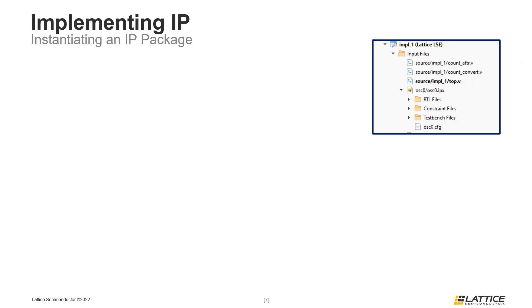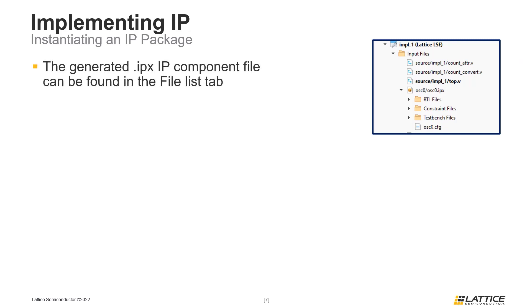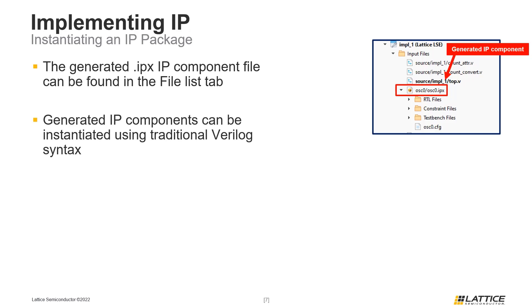Once an IP component has been generated, its IP component file will be added to Radiant's File List tab. The name of this file will match the name that was defined during component creation. This IP component file contains all the files that were generated with the new component. After an IP component has been generated, it can be instantiated in a project like any other Verilog module. The name of the module being instantiated should match the name defined during component creation. Users can also generate an instantiation template to simplify the process for instantiating an IP.